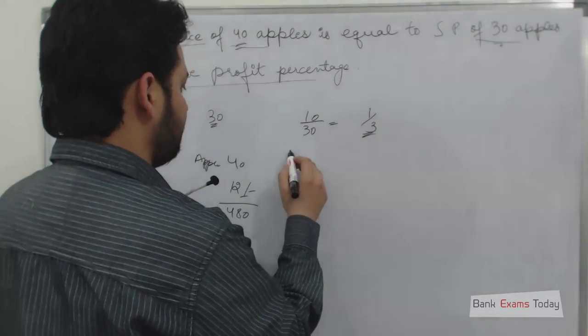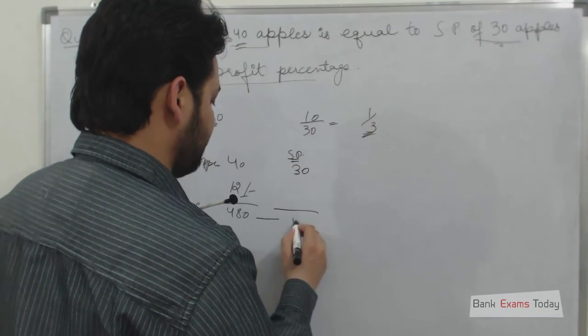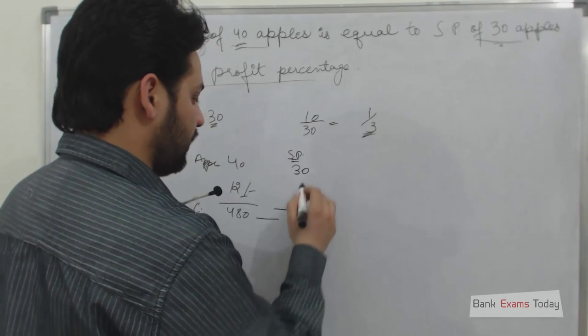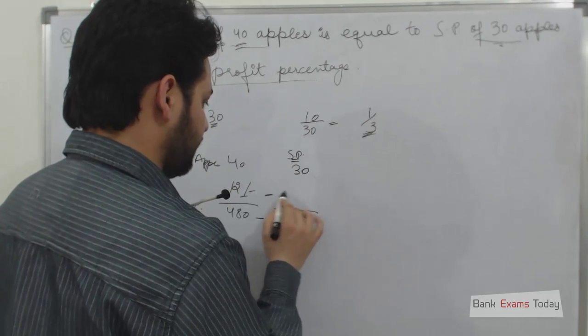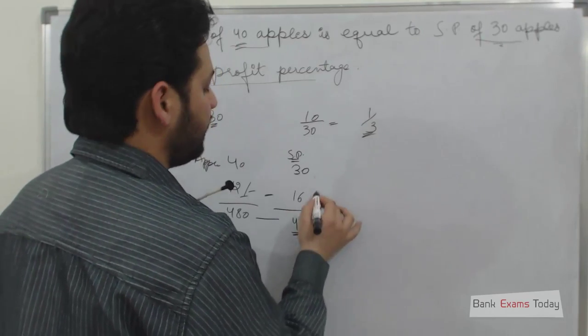What is the selling price? Selling price of 30 apples is same as cost price. So what will be the per unit cost? It will become 16 rupees.